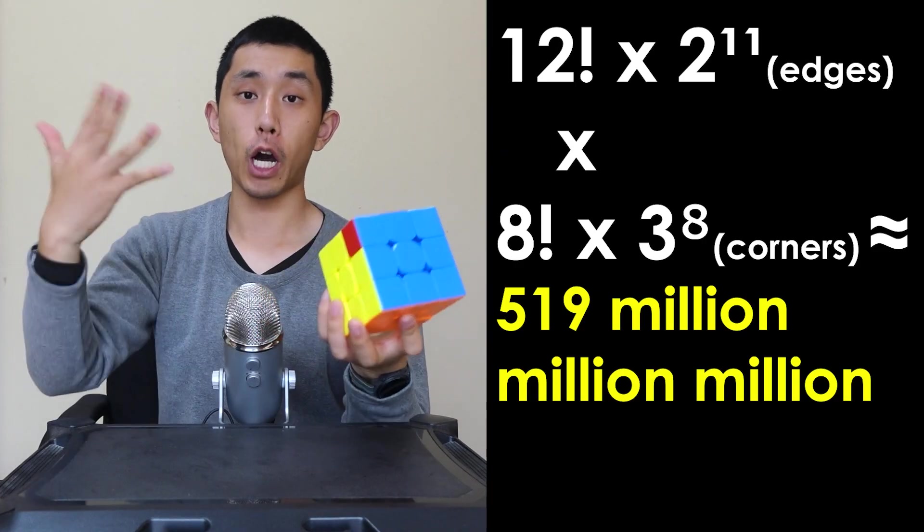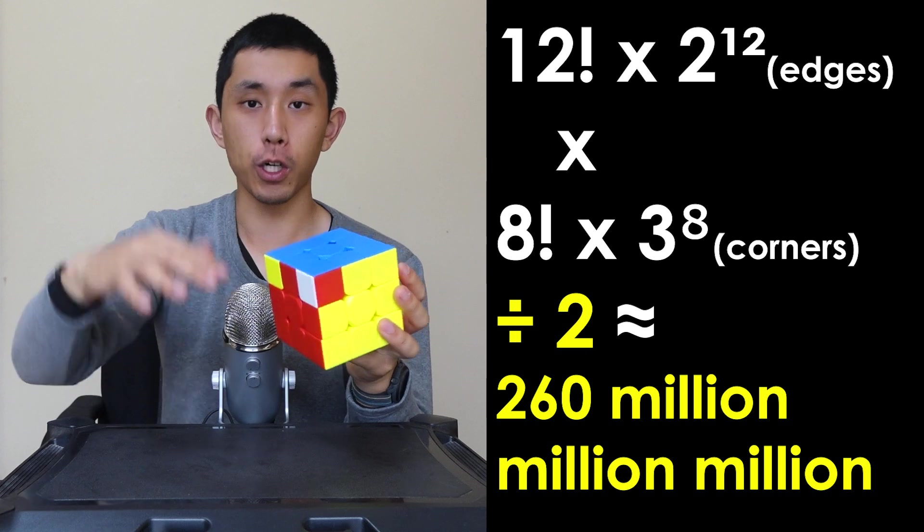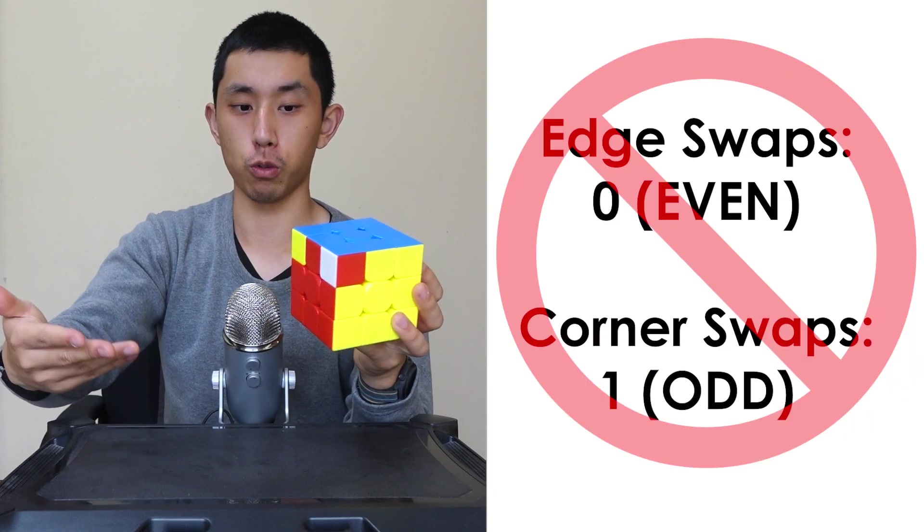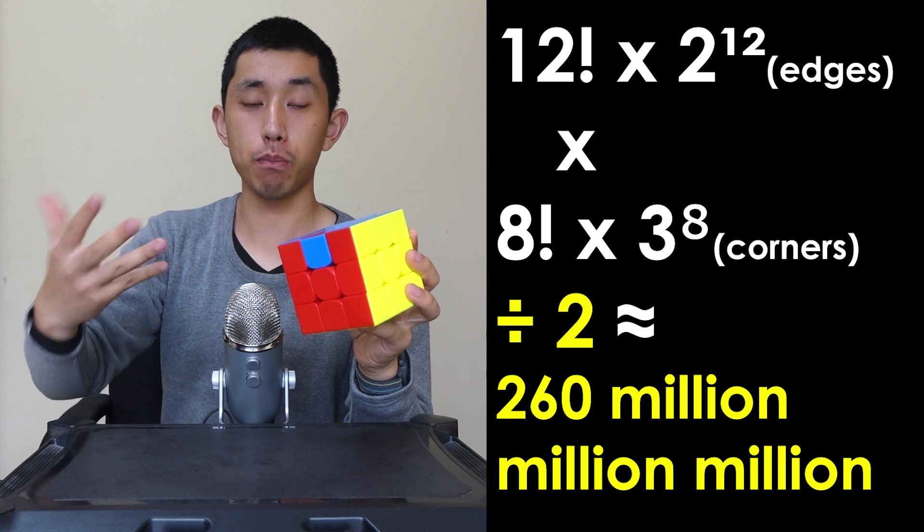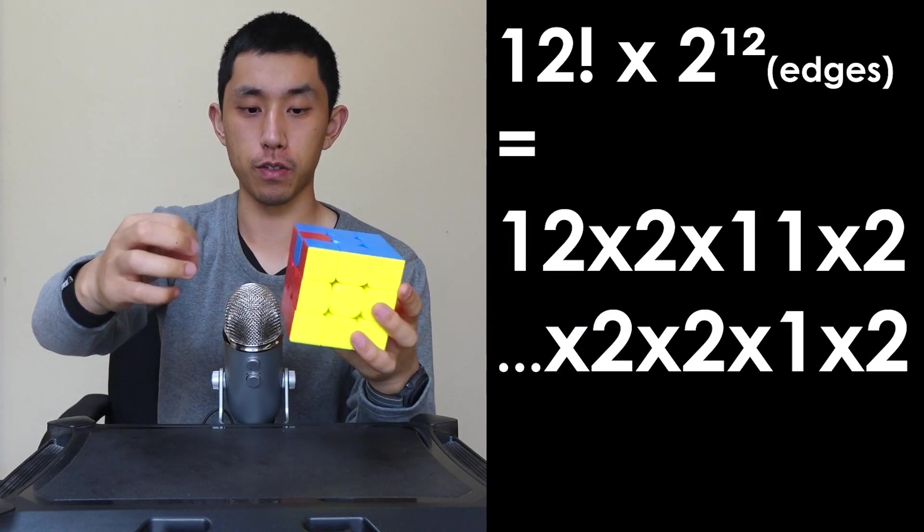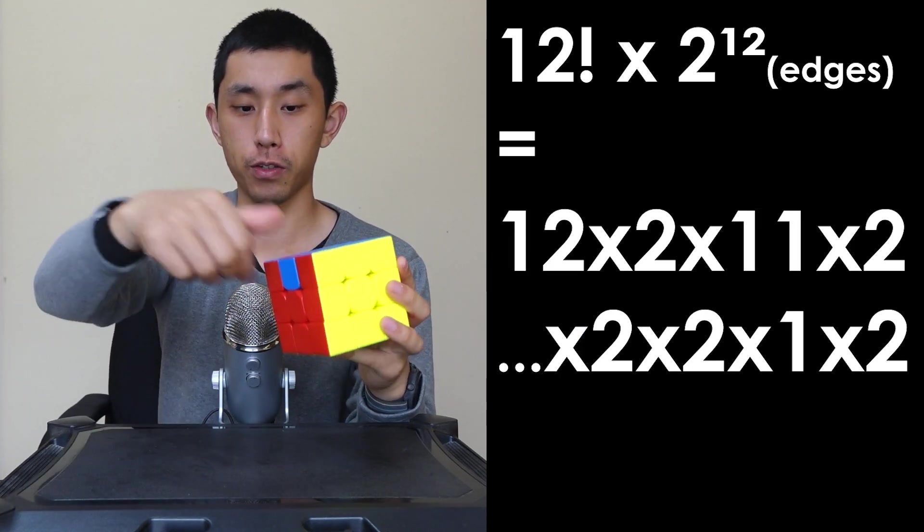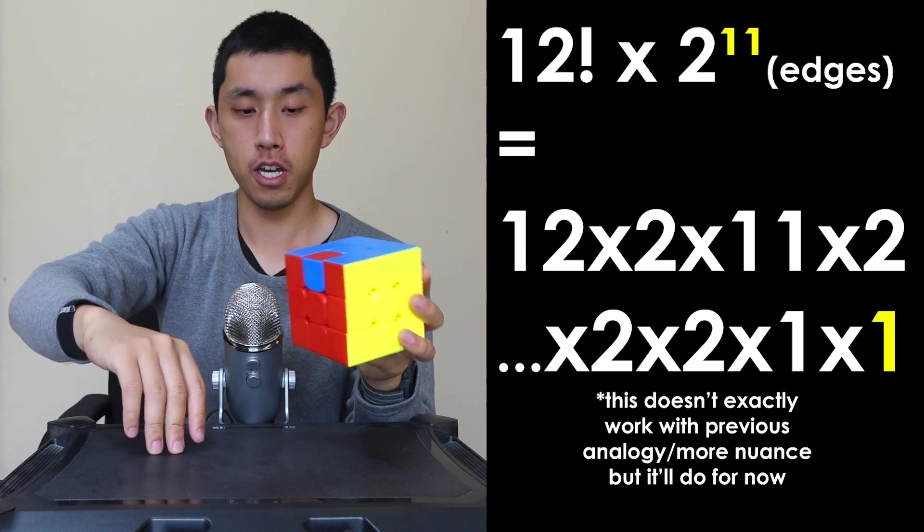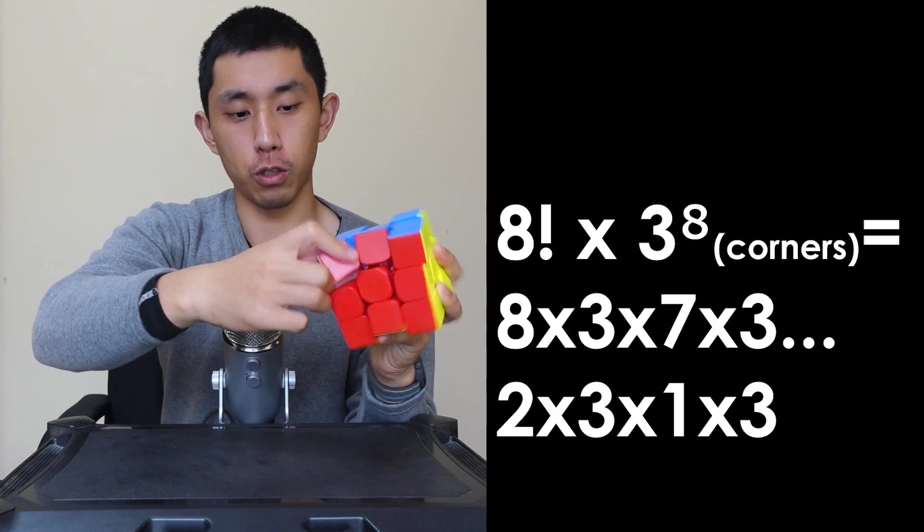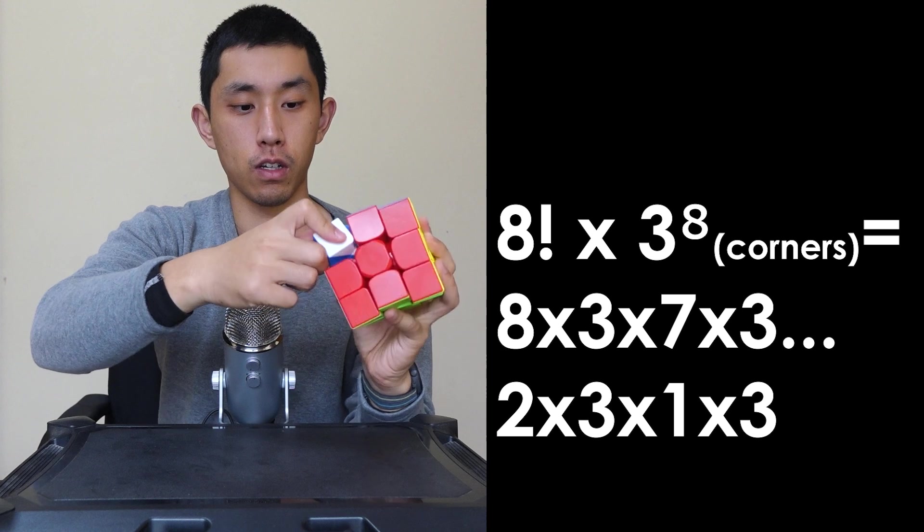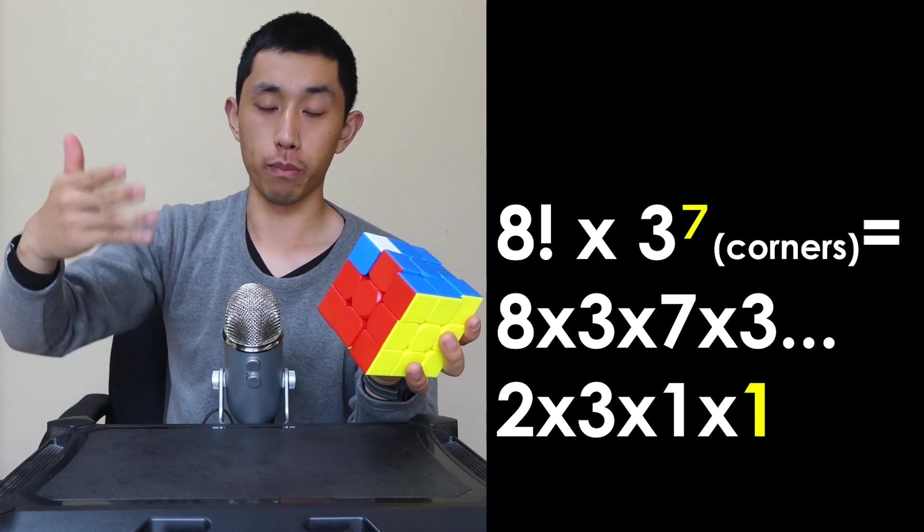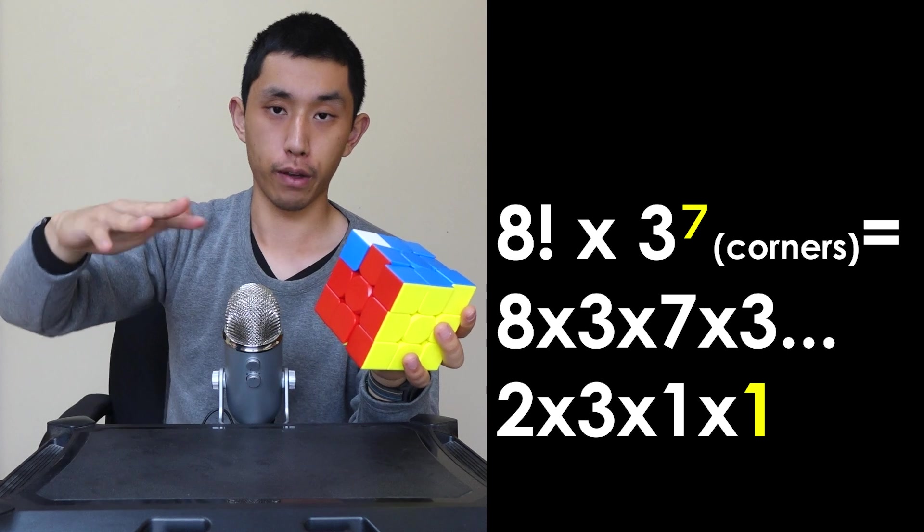For this reason, we can eliminate half of the total possibility because when we put the last two corners in, we can't put them in like this because this is an impossible state. We can apply similar logic for the flipped edges. When we get to the last part of putting the edges in, this last edge can only be put in one proper orientation and the same logic applies for the corners. If you have them twisted like this or like this, when you're putting the last corner in, there's only one possible orientation, much like for the edges.